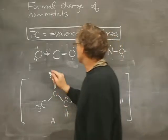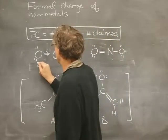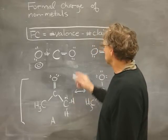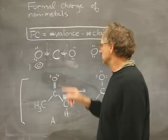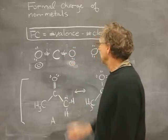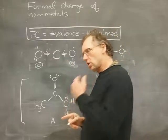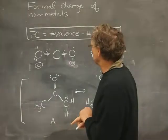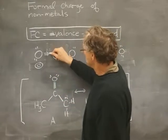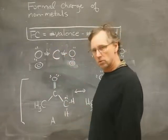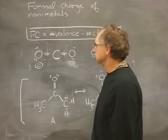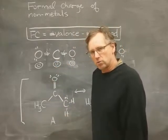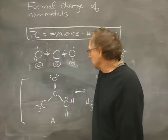Oxygen has a valence of six electrons, so we come up with a difference of zero. The right oxygen looks just like the first one, so it's the same. How about carbon? Carbon has a valence of four. How many electrons is it claiming? I count one, two, three, four — one electron from each bond. So I get a difference of zero. All formal charges are zero on carbon dioxide.